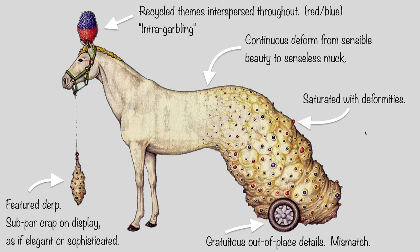So deformity is one motif. Gratuitous out-of-place details, or mismatch — we will see parts of an architectural structure or historical structure which don't seem to add up to a coherent explanation, or they don't agree with one another, or we just see a style clash. And then featured derp: subpar crap on display as if elegant or sophisticated. In this image we have this nothing burger here paraded around as if it's worth parading around. So at many sites, we will see something strange and derpy on display as if it's something magical and wonderful.